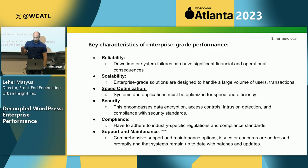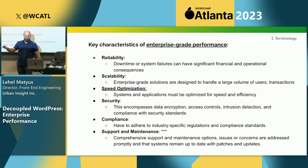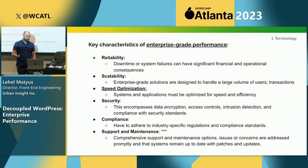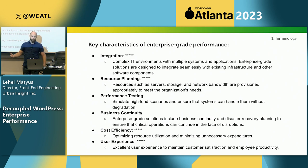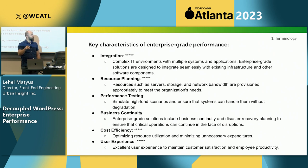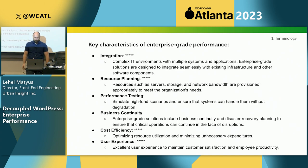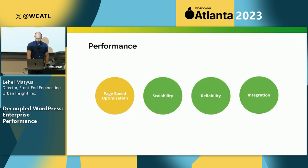When we talk about enterprise-grade performance, it's not just speed. We have to think about reliability, scalability, speed and optimizations, security, compliance, support and maintenance — especially if you're an agency — integration, resource planning, performance testing, business continuity, cost and efficiency, and user experience. The starred items are where WordPress shines in a decoupled solution, in my opinion and that of Urban Insight's.